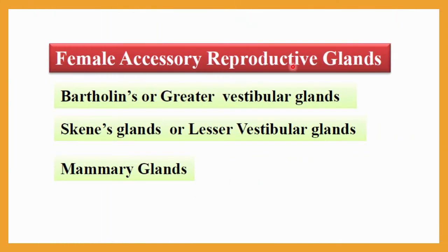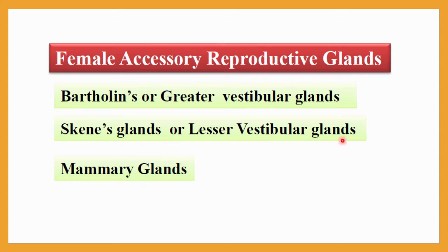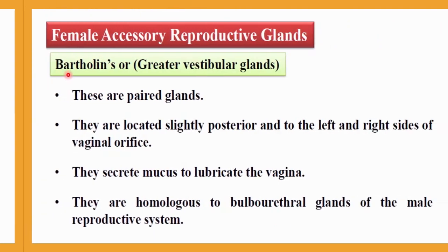Female accessory reproductive glands include three glands: first, Bartholin's gland, also called the greater vestibular gland; second, Skene's gland, also called the lesser vestibular gland; and third, the mammary gland, also called the milk-secreting gland.